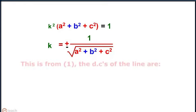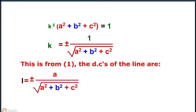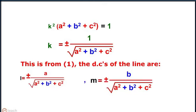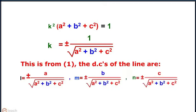From equation 1, the direction cosines of the line are L equals plus minus A by under root of A square plus B square plus C square, and similarly, N equals plus minus C by under root of A square plus B square plus C square.